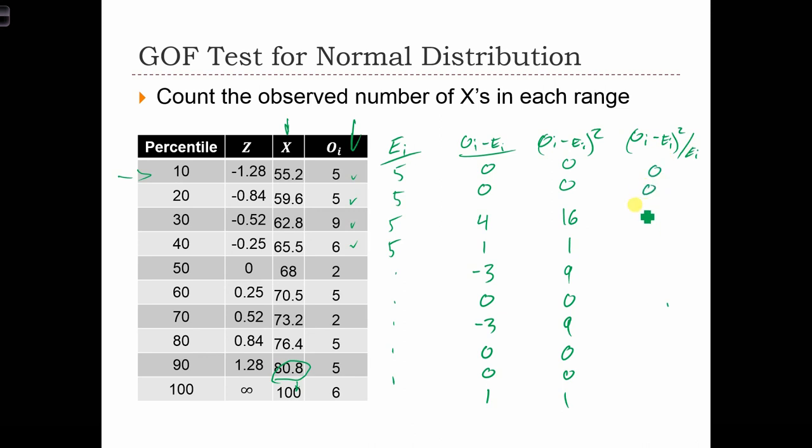0, 0, 16 over 5, 1 fifth, 9 fifth, 0, 9 fifth, 0, 0, 1 fifth. And then we add that all up. When we've added it all up, we find that it's equal to 7.2. So we have a chi-squared statistic equal to 7.2.